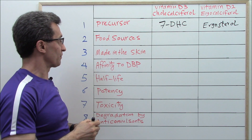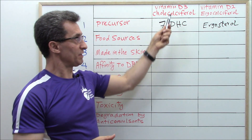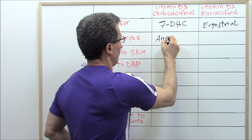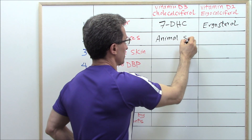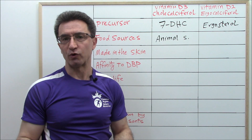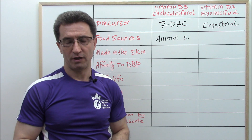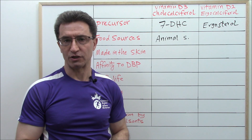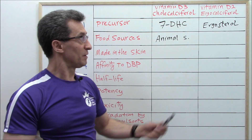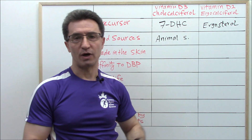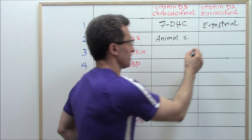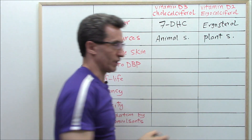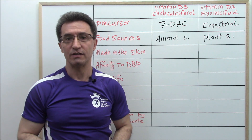Number two: food sources. Vitamin D3 comes from animal sources such as cod liver oil, fish, and egg yolk. Sometimes you can find vitamin D3 in fortified foods such as milk and margarines. But vitamin D2 comes from plant sources such as mushrooms and yeast.